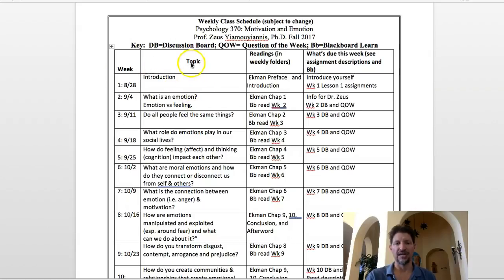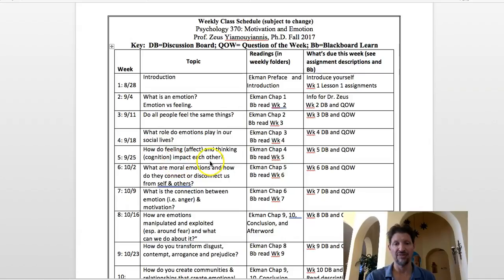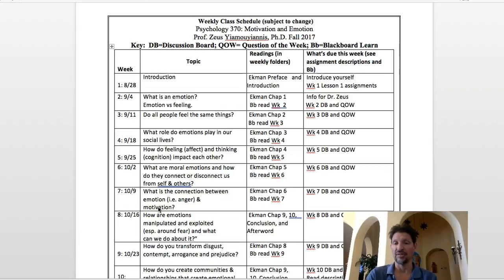The format for the class is the same each week. We'll have a topic, usually a guiding question — what is an emotion? Do all people feel the same things? How do feeling, that is affect, and thinking, that is cognition, impact each other? What is the connection between emotion, i.e. anger, and motivation? These are all basic questions guiding each week, and we do a very applied approach.